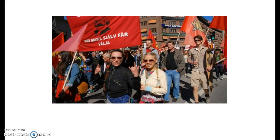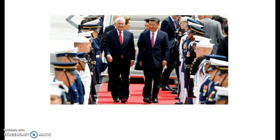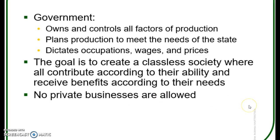A good example of a socialist country would be Sweden. In a socialist country, workers can choose their own occupation and the goal is to make things more egalitarian, with small-scale private businesses permitted. This is in contrast with a communist system — as seen in Cuba, North Korea, or China — where the government owns and controls virtually everything. You don't get to decide if you open a business; the government decides your occupation and your wages. They really do control all facets of life — a much more extreme version of reality.